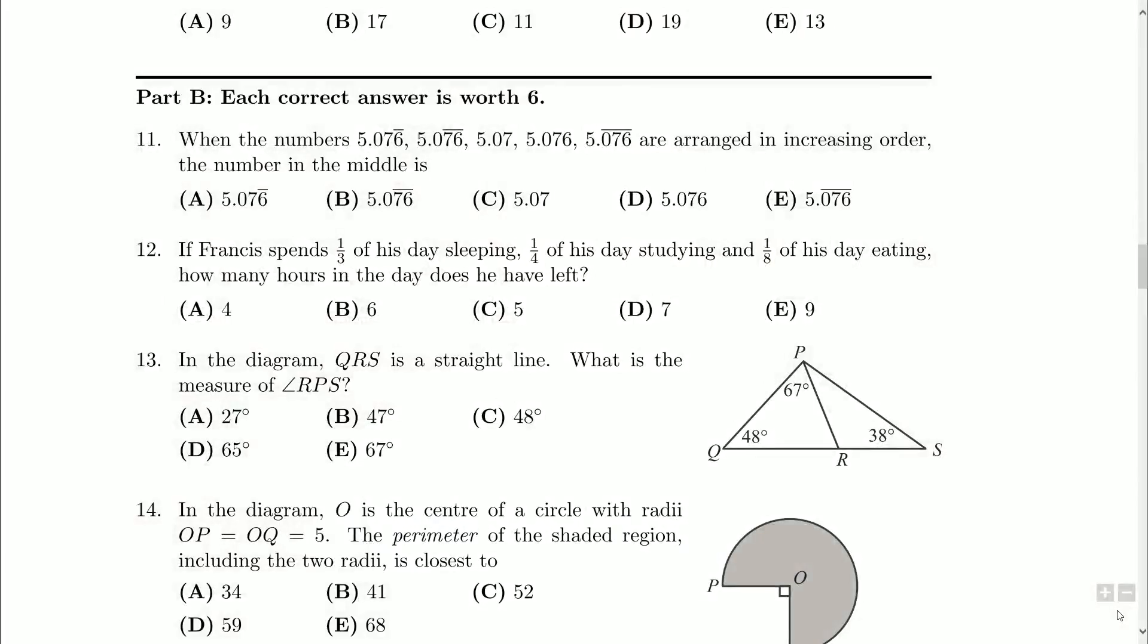Question 12 says, if Francis spends one-third of his day sleeping, one-quarter of his day studying, and one-eighth of his day eating, how many hours in the day does he have left? Well, we've got 24 hours in a day, and thanks to these fractions, we can figure out how much time Francis spends doing everything else.